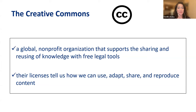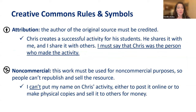For the Creative Commons rules and symbols, you might see this little person here — that means attribution. Attribution means the author of the original source must be credited. For example, Chris creates a successful activity for his students and shares it with me, and I share it with others. I must say that Chris was the person who made the activity — that way I give him credit. Now, you might see that dollar sign with an X through it. That means non-commercial. This work must be used for non-commercial purposes — people can't republish and sell the resource. I can't put my name on Chris's activity and sell it to others for money.